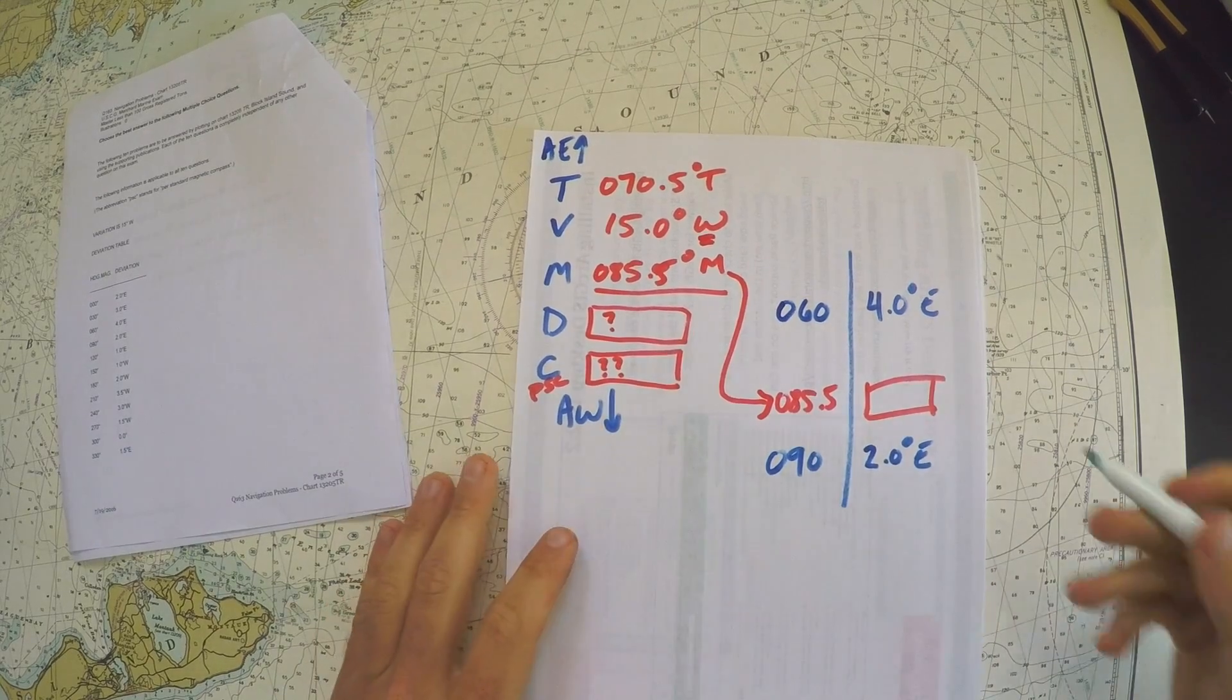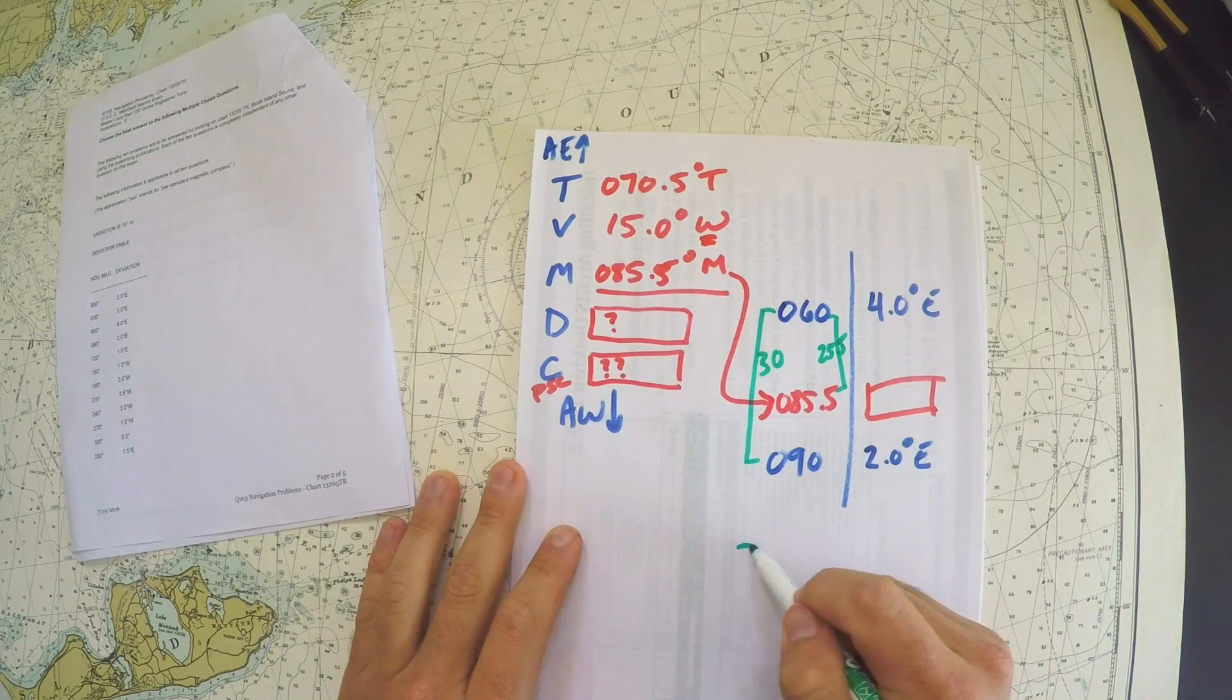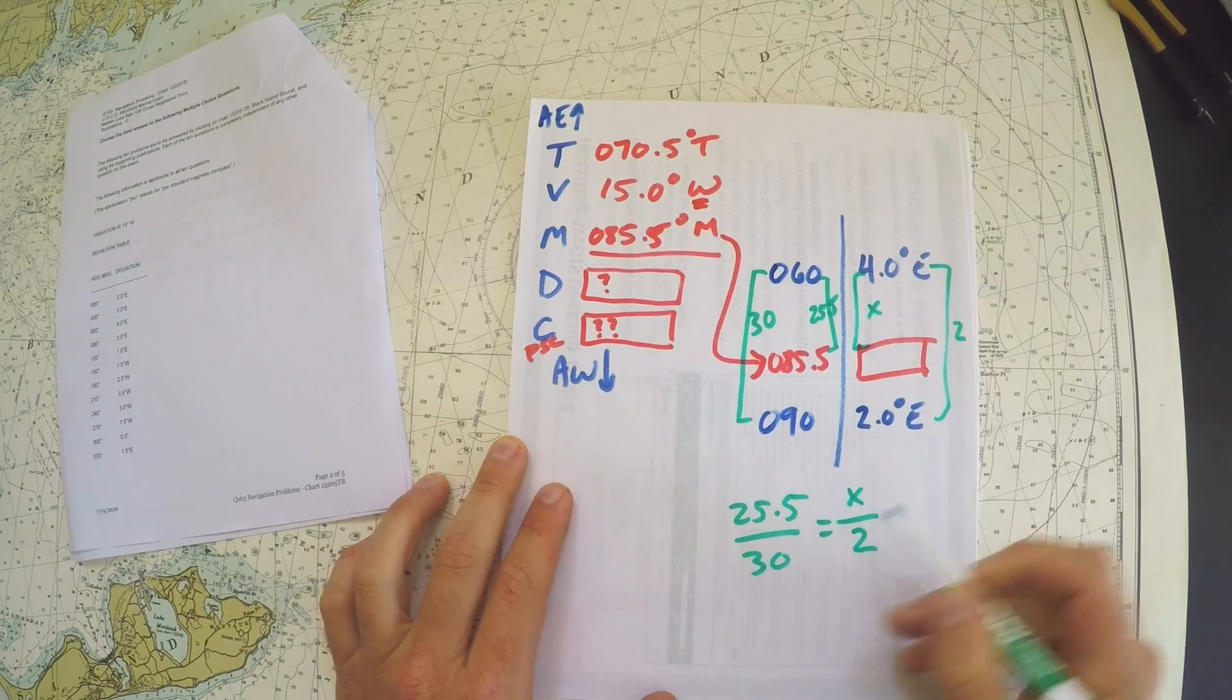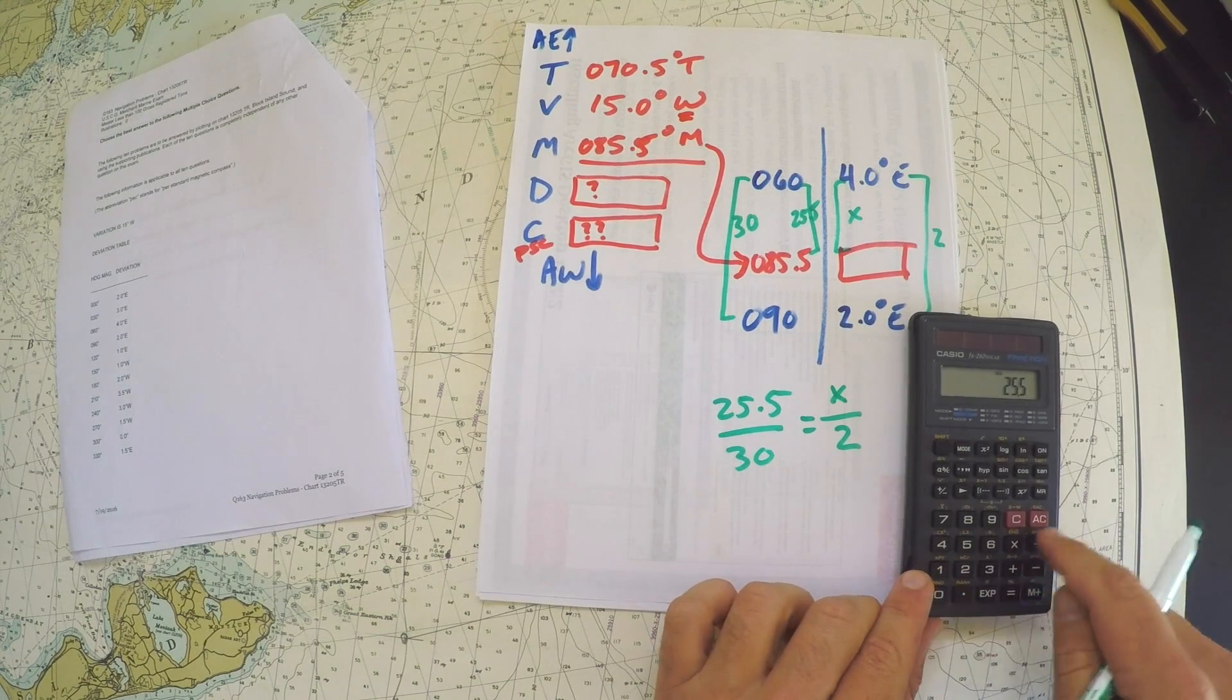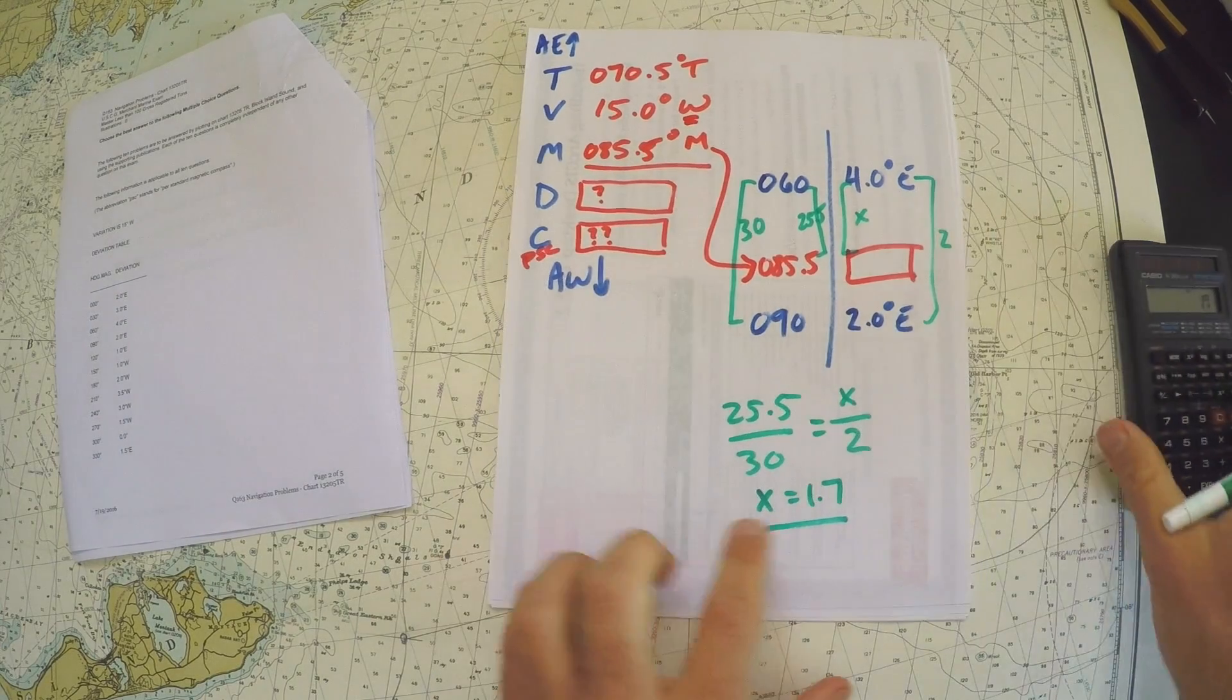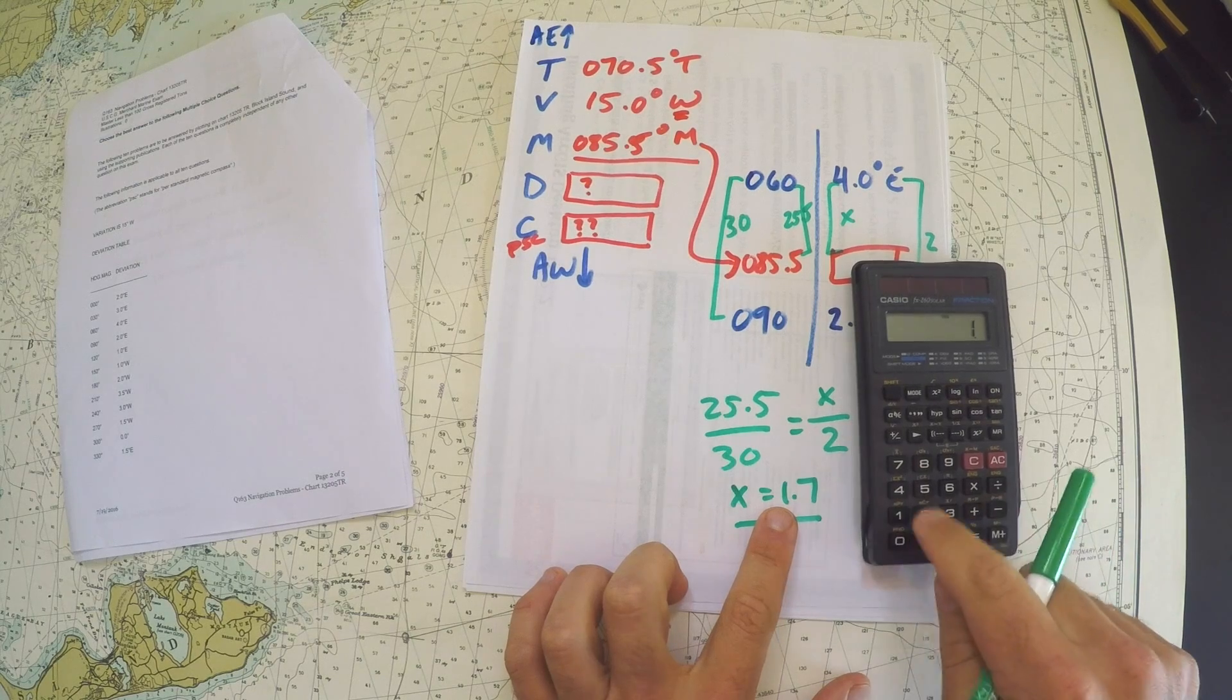The way that we can solve this problem is by using ratios. This gap is 30 degrees, this gap is 25.5. So 25.5 out of 30 is equal to this gap which is 2, and this gap which is x. So x over 2. If we go back to the old math, you can do 25.5 divided by 30 equals, and then multiply it by 2, and you get an x value of 1.7. So does that mean this goes in that block? No, that means the gap here between 4 and our value is 1.7.